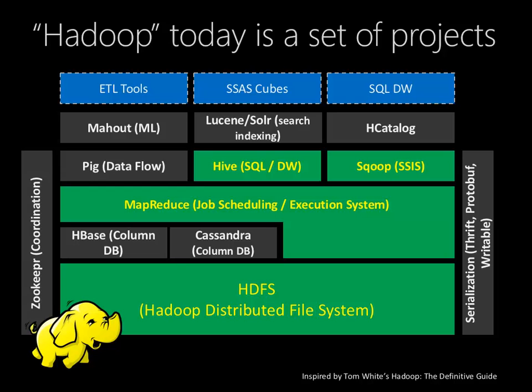Coming at this from more of a SQL data warehouse point of view, the green boxes are the ones we're most concerned with. That's the HDFS file system, MapReduce — which is the job scheduling and execution system — Hive, which puts a SQL layer on top of all of that, and Sqoop, which we can use to move data in and out of SQL relational databases.